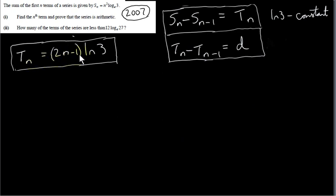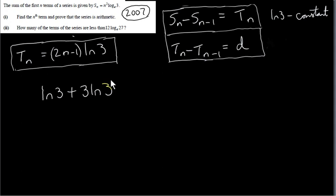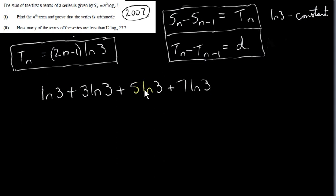Let's write down a few terms. For t₁, plug n=1: (2−1)·ln3 = ln3. For t₂, plug n=2: (4−1)·ln3 = 3·ln3. Since d = 2·ln3, adding 2·ln3 each time gives t₃ = 5·ln3, t₄ = 7·ln3. So the series is: ln3, 3·ln3, 5·ln3, 7·ln3, ...